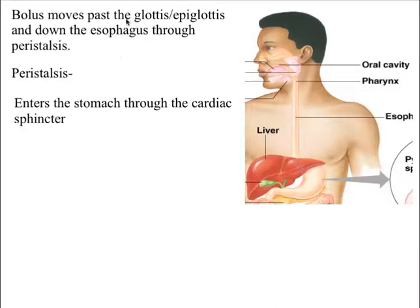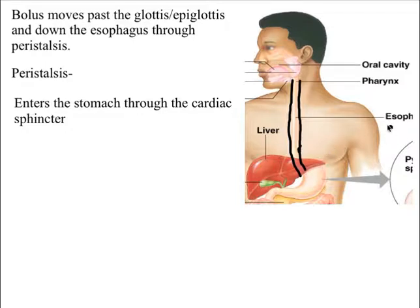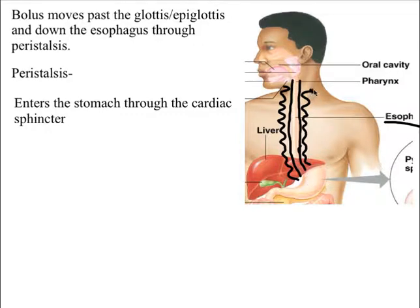The bolus moves past the glottis and epiglottis and down the esophagus through peristalsis. Peristalsis occurs in the esophagus — this tube that goes down and connects to the stomach. Peristalsis is a wave-like motion that moves the bolus down through the esophagus. The muscles contract in waves, also smashing the bolus down further — that smashing is another form of mechanical digestion.